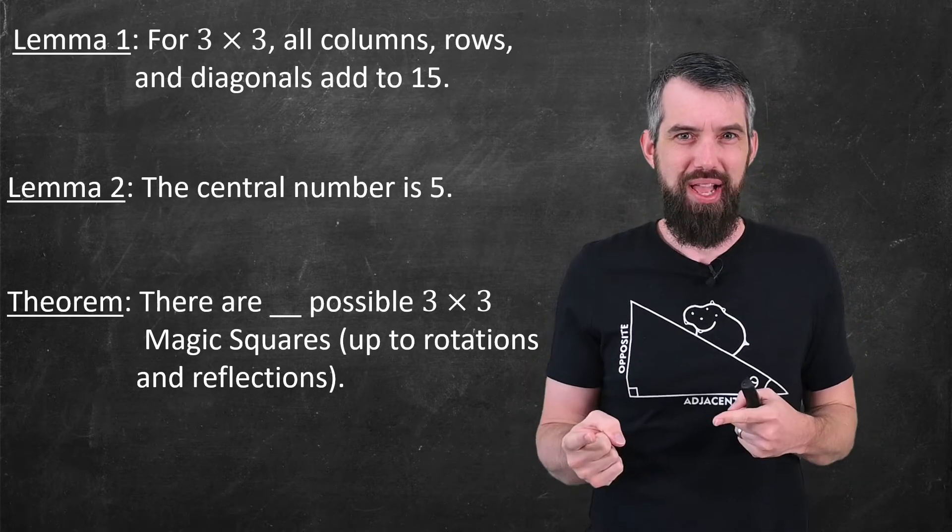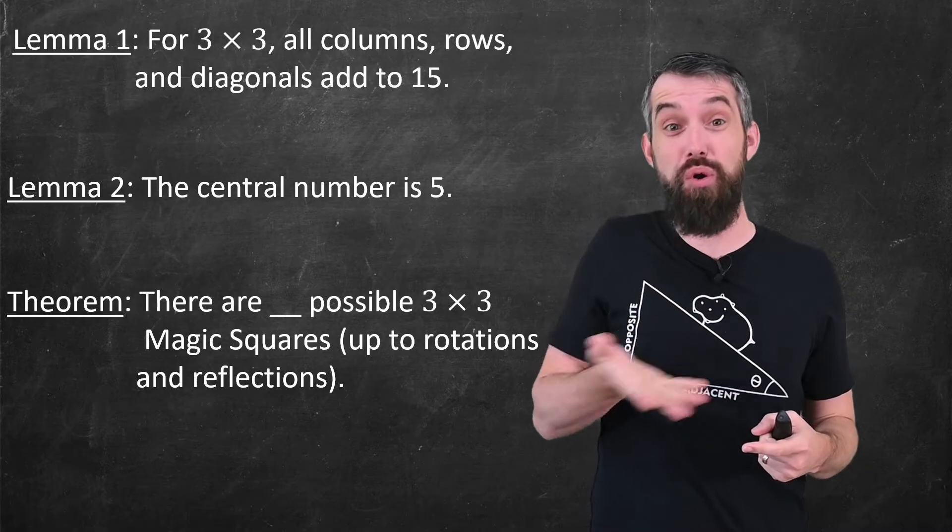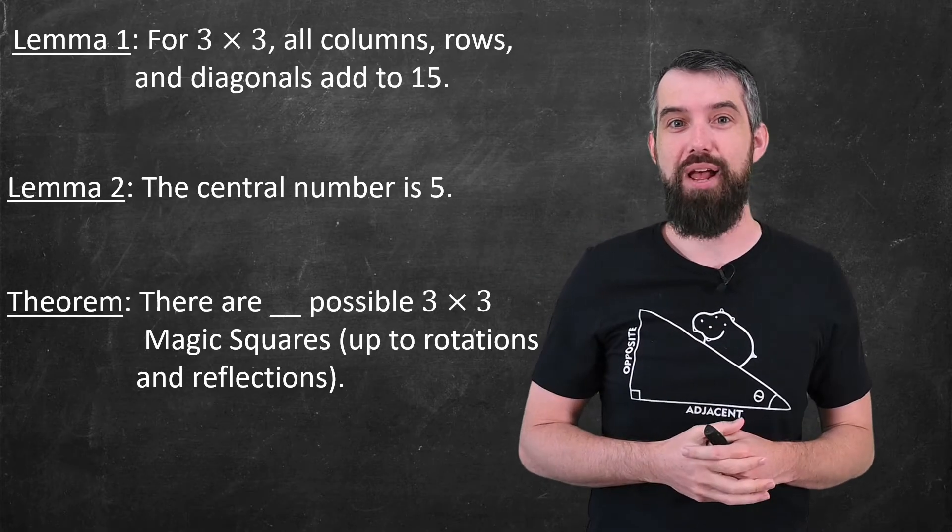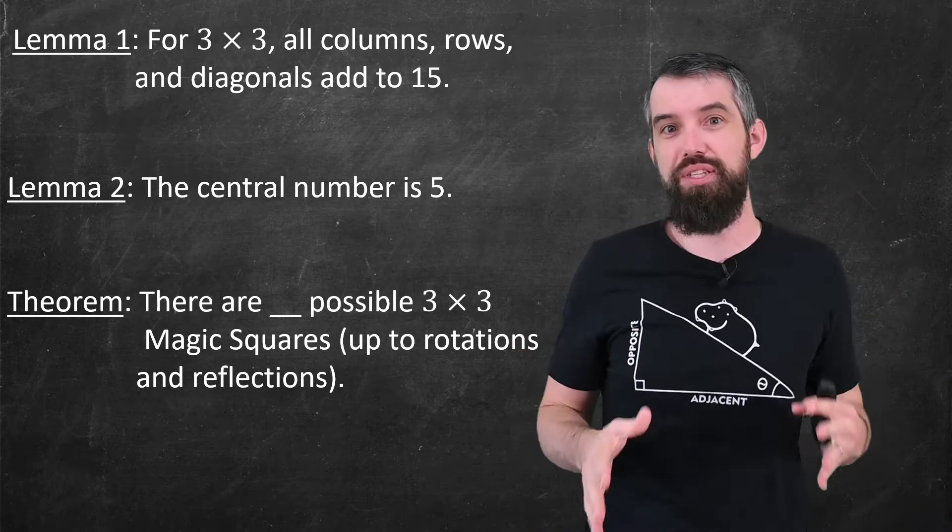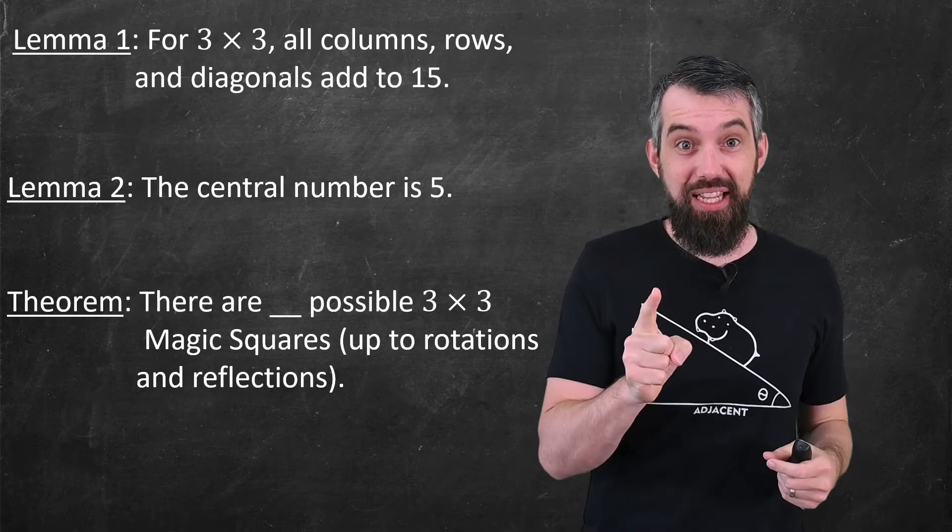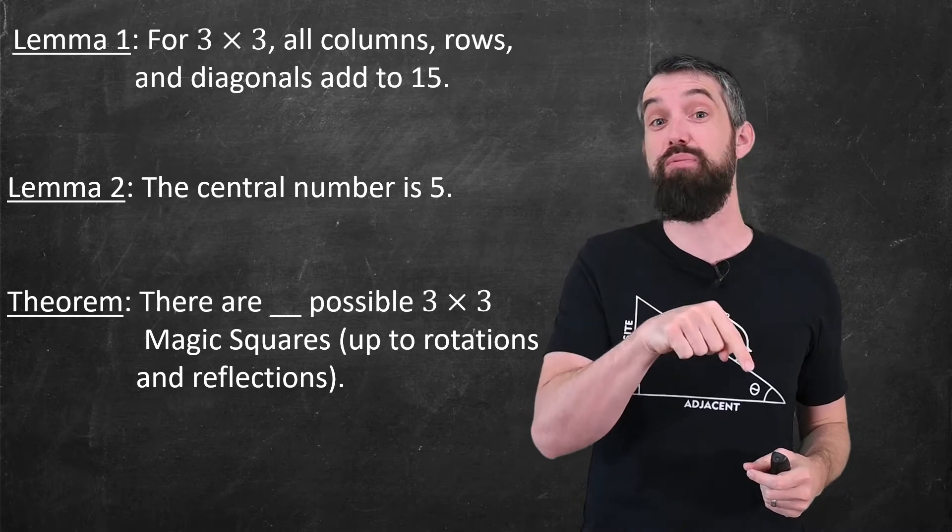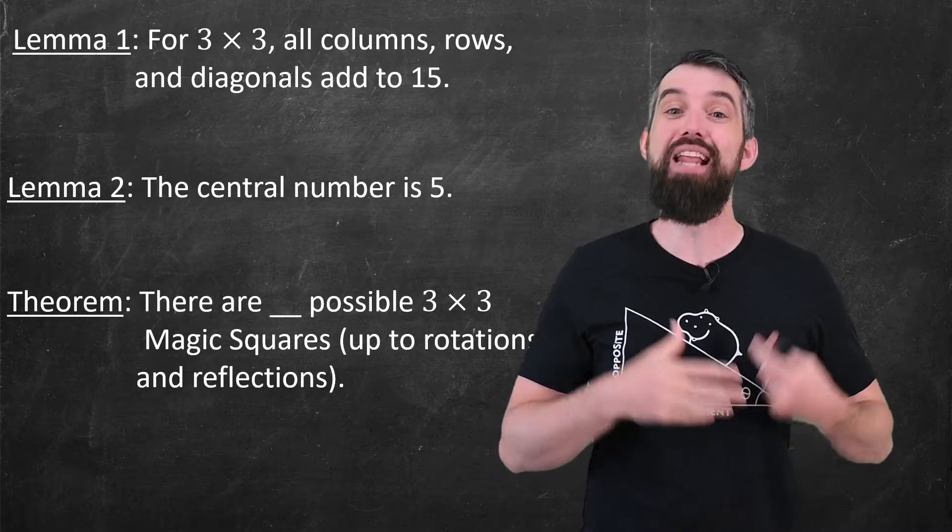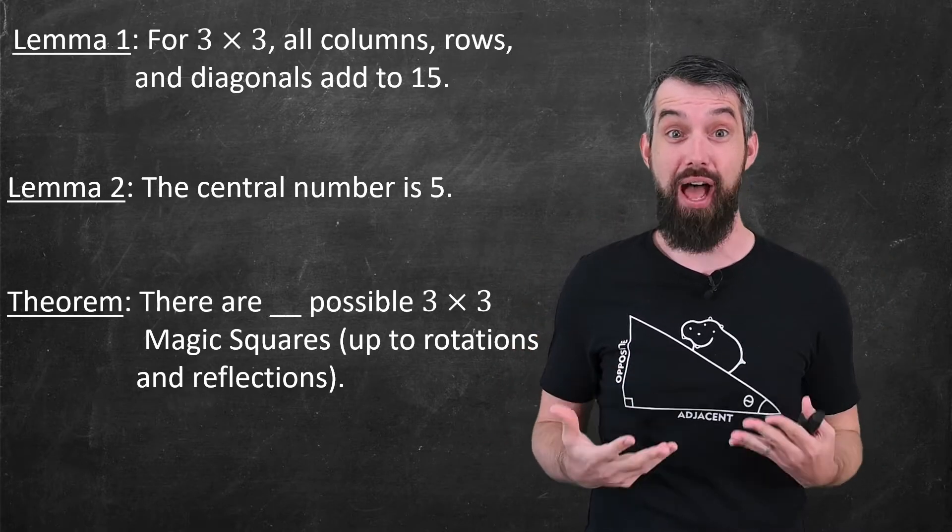I'm going to first show that the addition of the rows to 15, like we saw in the examples, always happens, it's always going to add up to 15. And secondly, you might have noticed in our examples, the center thing was always a 5. And again, that is also a lemma, the center number always has to be a 5.